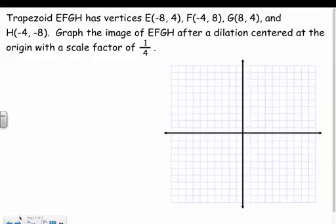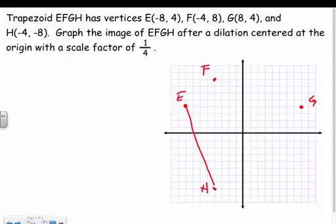If we get it on a coordinate plane and it gets dilated about the origin. For example here, let's graph EFGH first. So E is at negative 8, 4. F is at negative 4, 8. G is at 8, 4, and H is at negative 4, negative 8. Okay, and I'll connect my dots here.